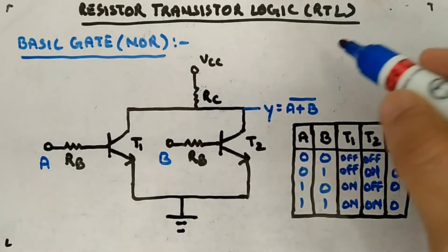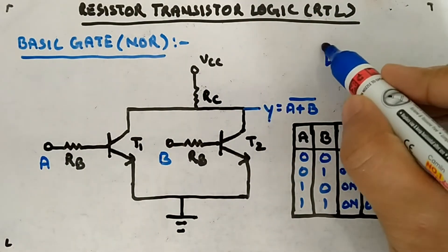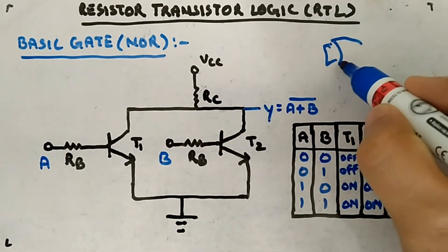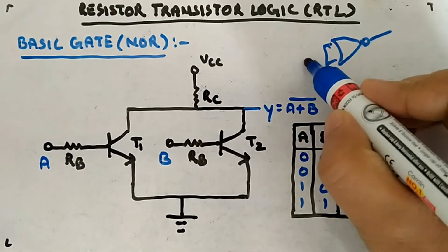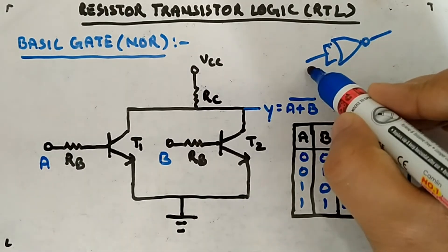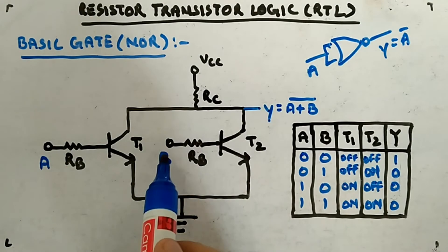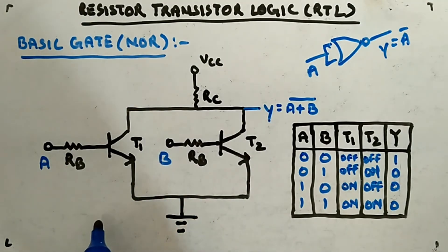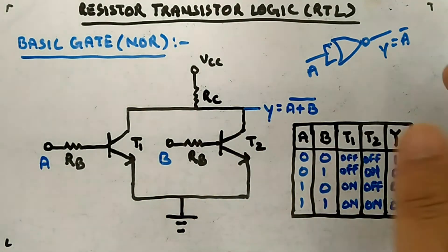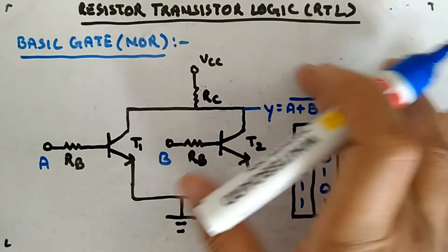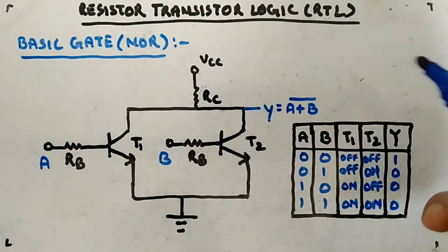That's the only circuit you will have here. If you have to make a NOT gate, then you have to connect the NOR gate like this - both inputs together to some input variable, and Y will be A bar. You connect these two guys together and provide a single input, at the output you will get A bar.